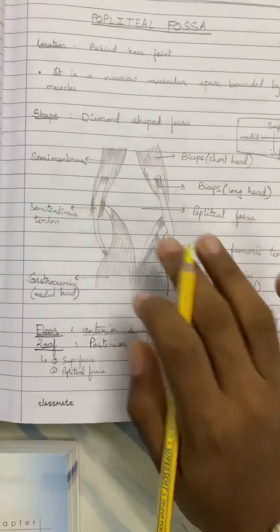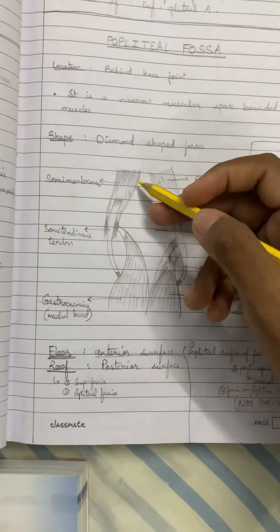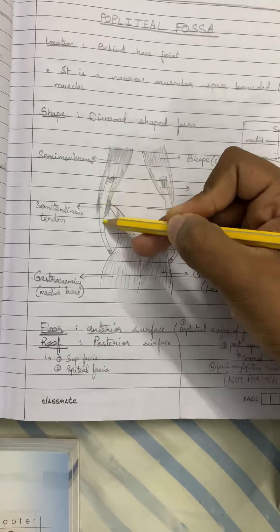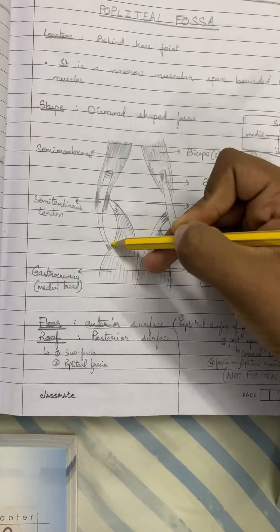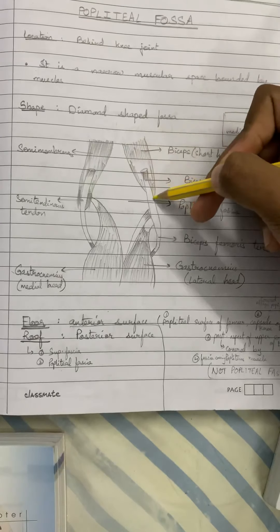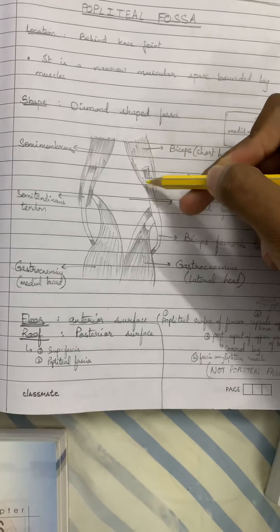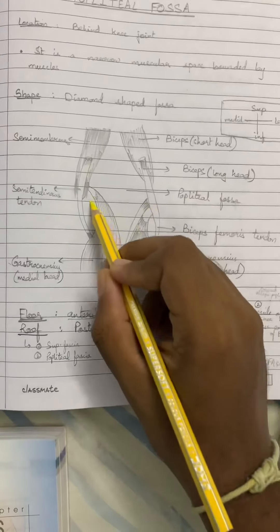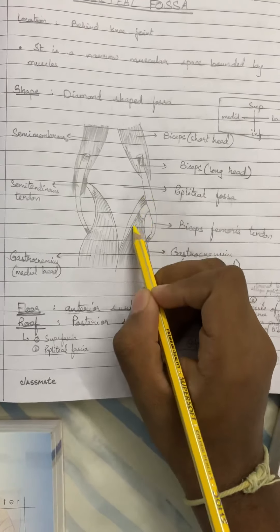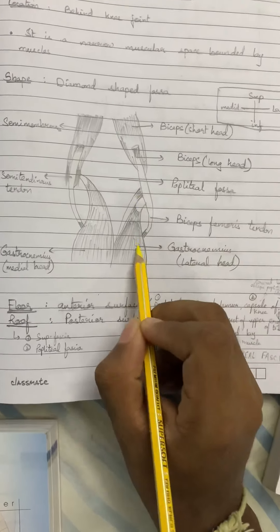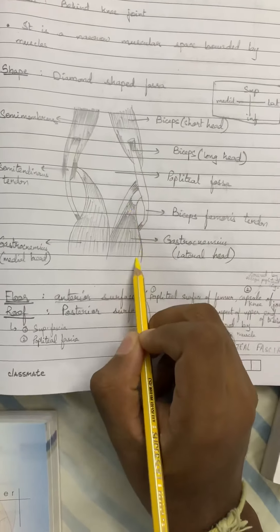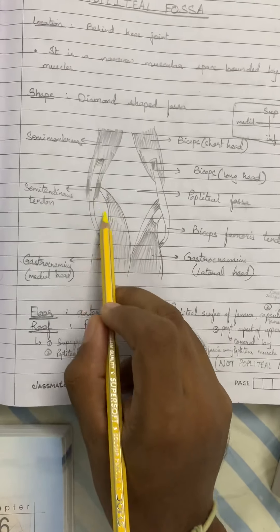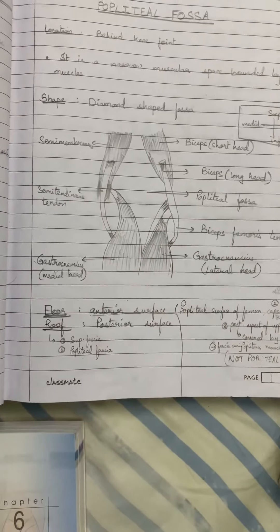All the boundaries are formed by muscles. Superomedially we have semimembranosus and semitendinosus. Superolaterally we have the biceps femoris, and then inferolaterally the plantaris and the gastrocnemius lateral head, and inferomedially we have the medial head of the gastrocnemius.